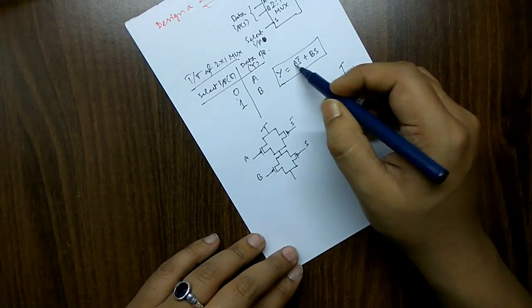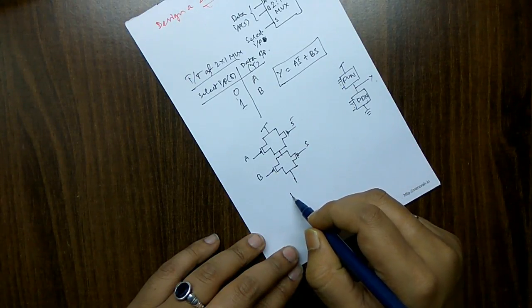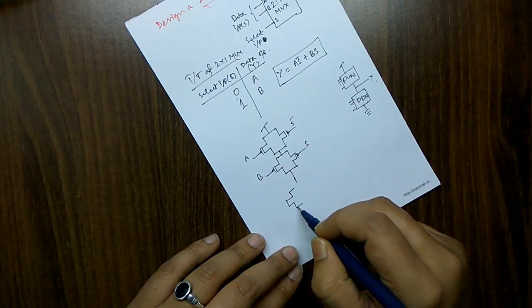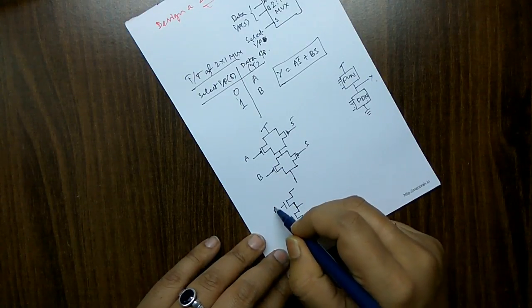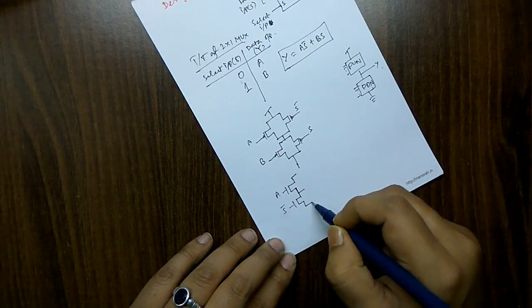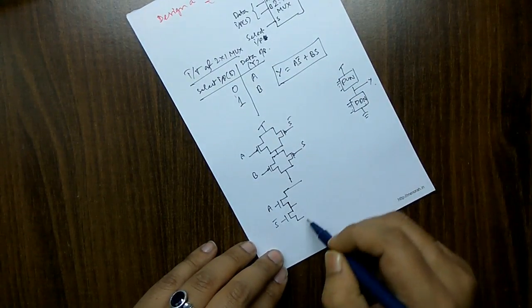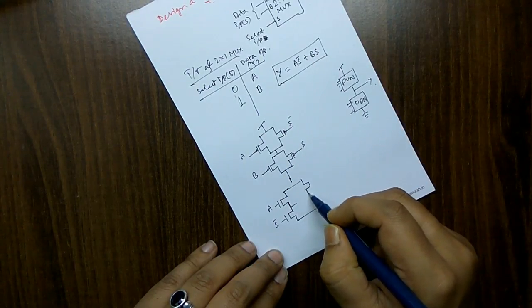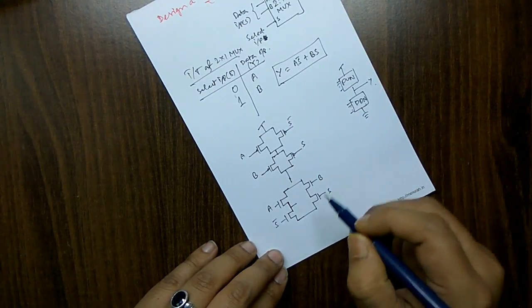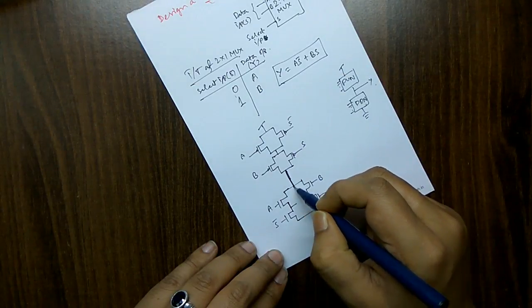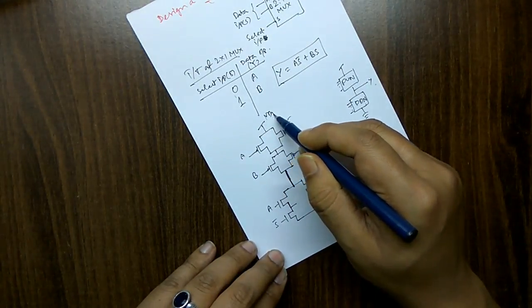Now we have to design the pull-down network. A dot S̄ means these two are connected in series in the NMOS network. The OR operation means the whole thing needs to be connected in parallel. So A and S̄ are connected in series, and then B and S are also connected in series with both NMOS transistors in series. The whole pull-down network is then connected in parallel with the pull-up network, with the pull-up network connected to VDD and the pull-down network connected to ground.